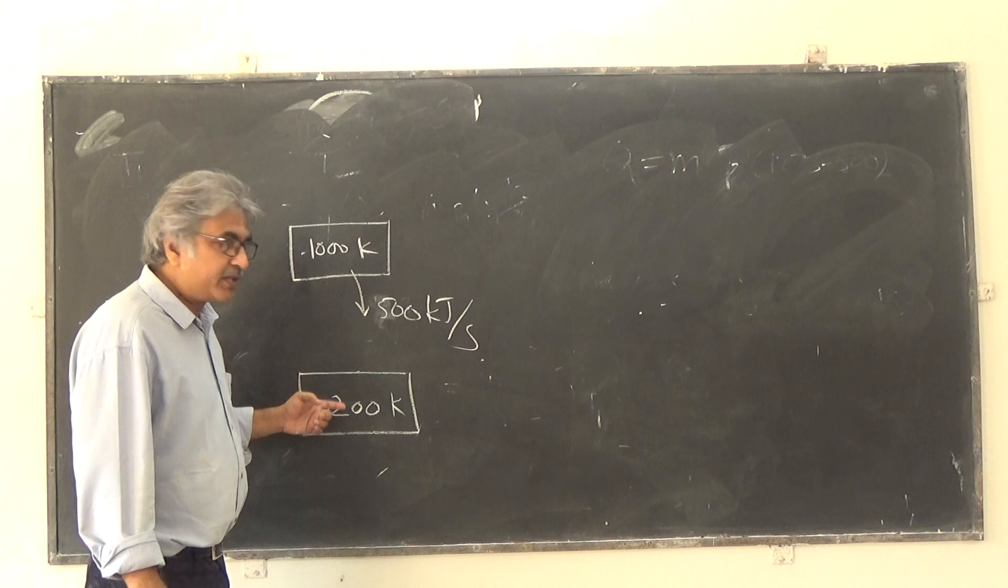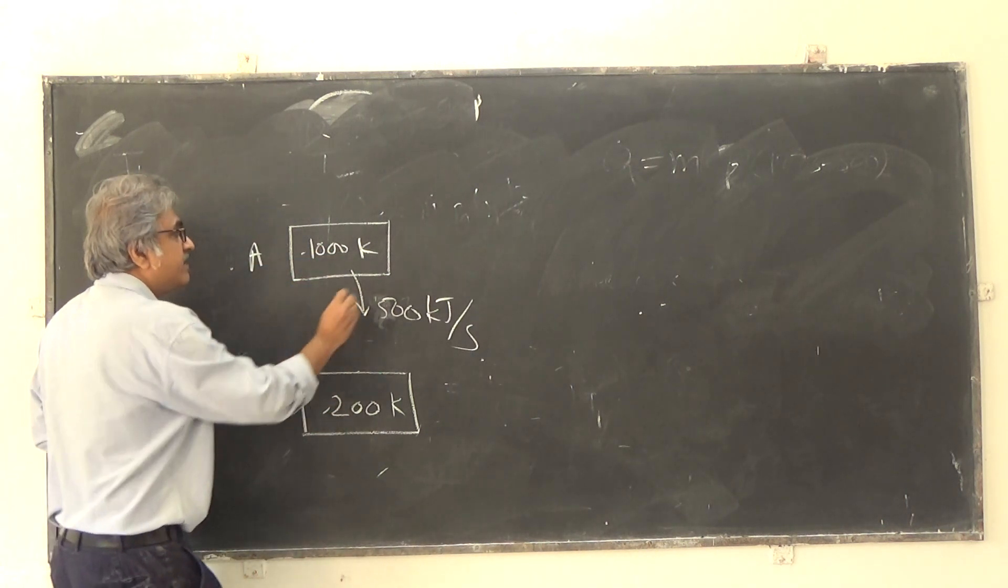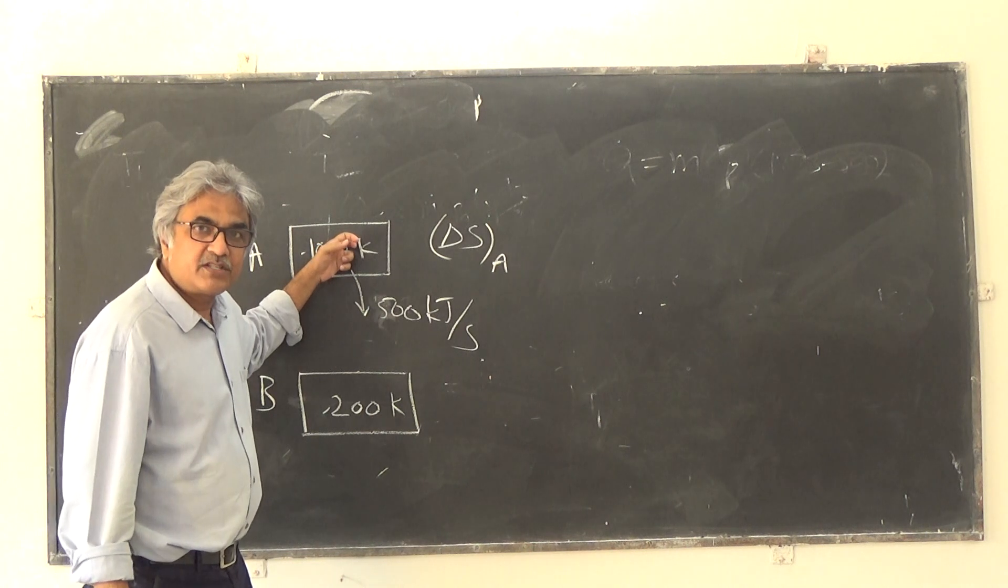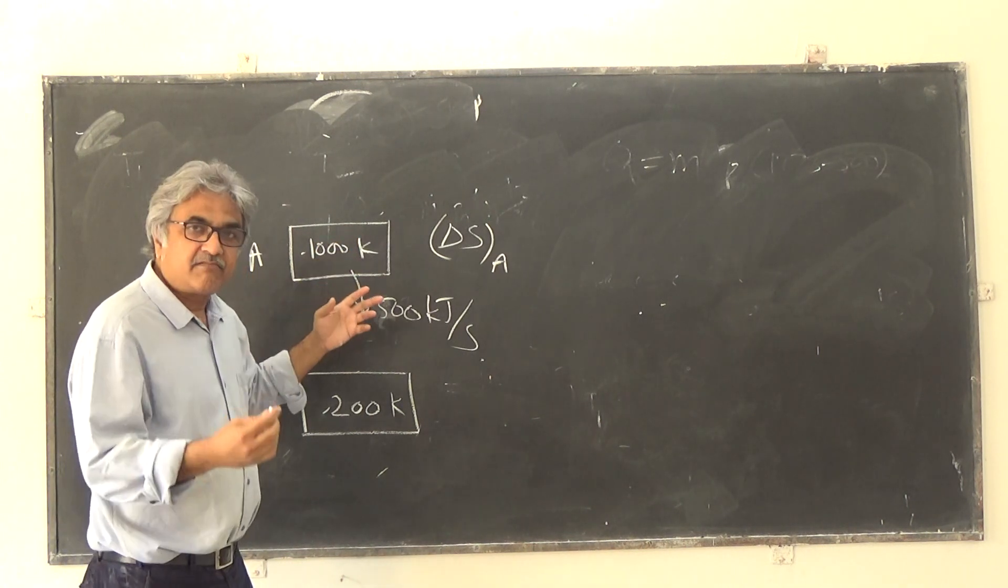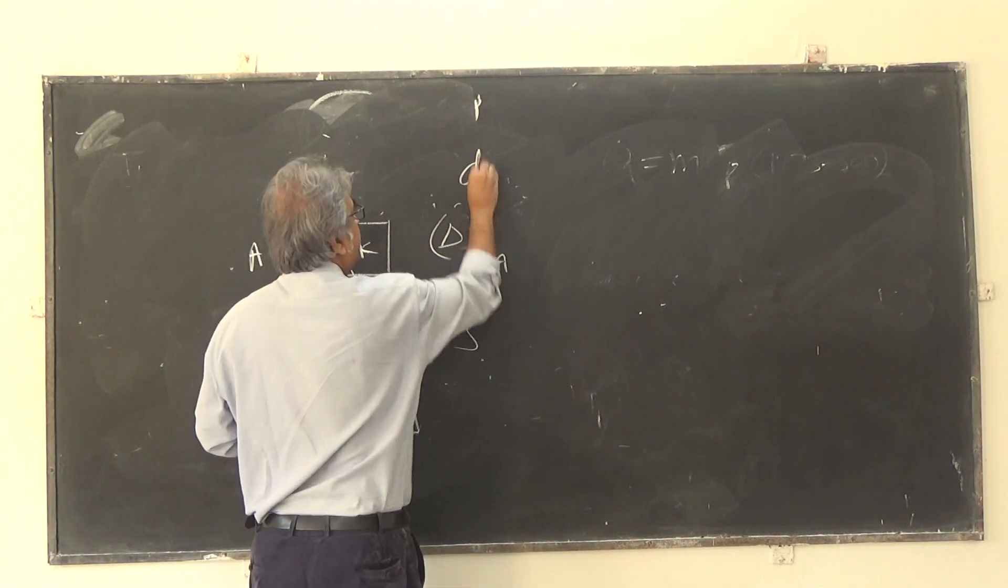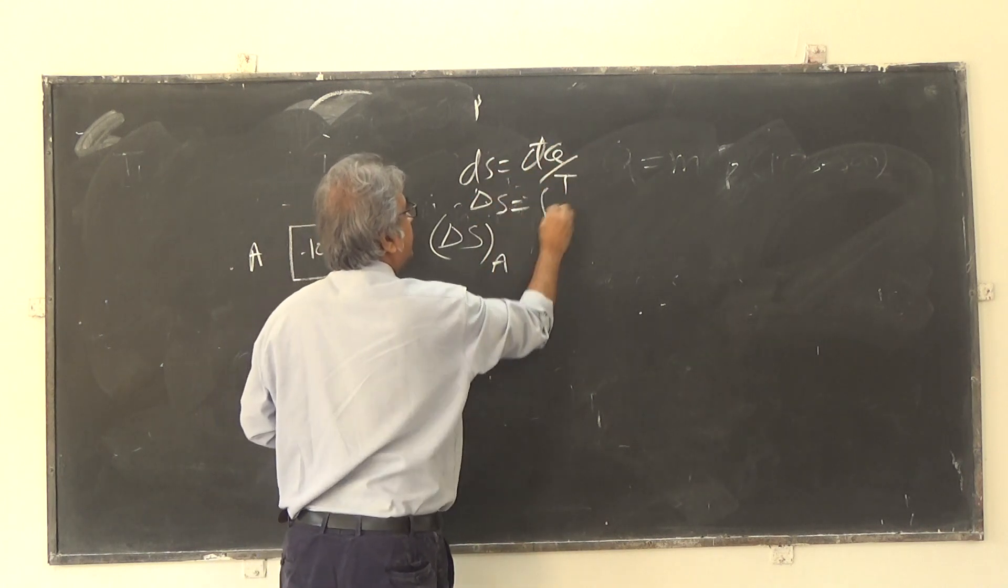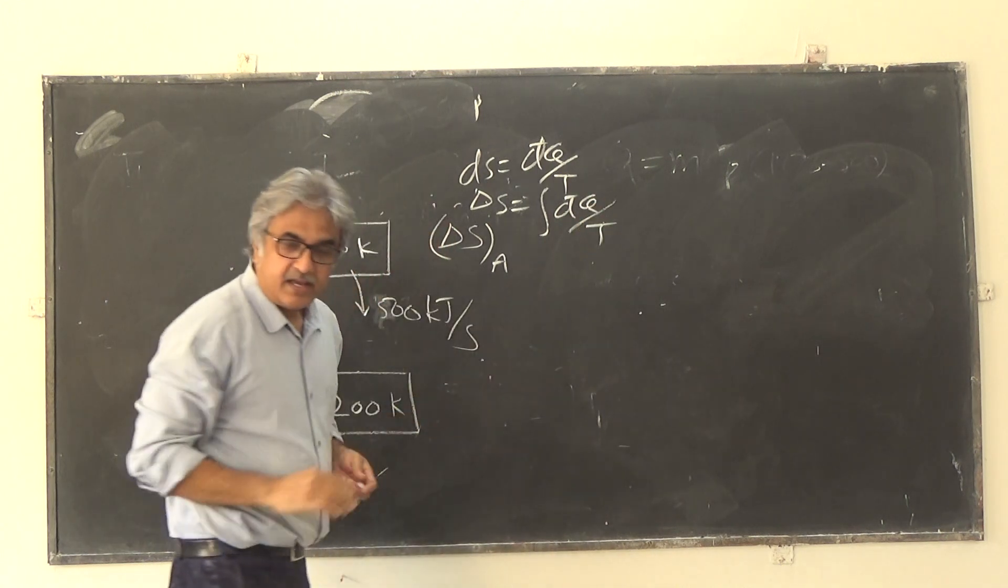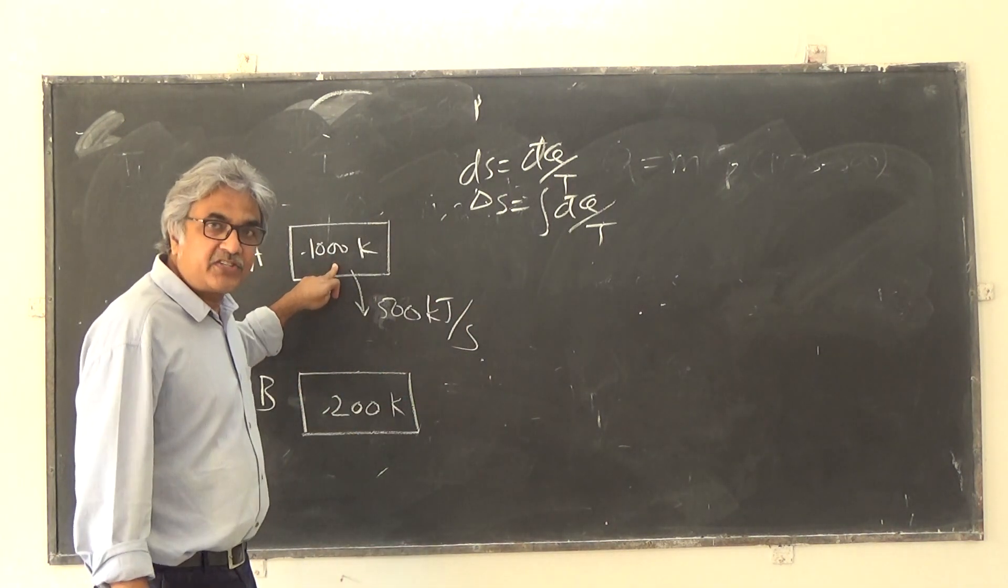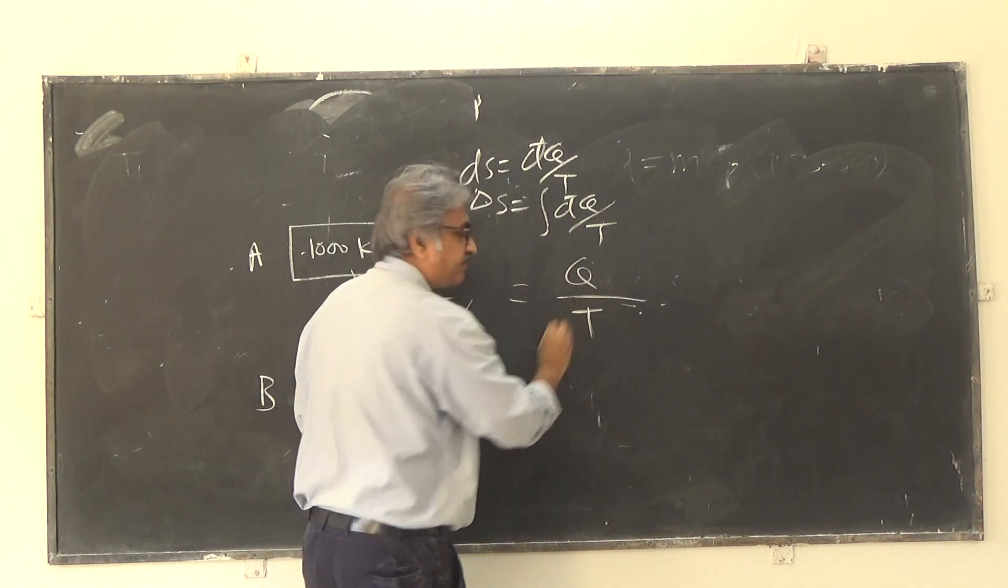Since temperature is constant, we know that entropy change... temperature is constant. So you know that the expression for ds is dQ by T, and expression for delta s is integration of dQ by T. If T is constant, T is not changing, so you take T out and integration of dQ is Q. Right. So all that it means is that when the temperatures are constant, then the entropy change of this body will be Q by T.